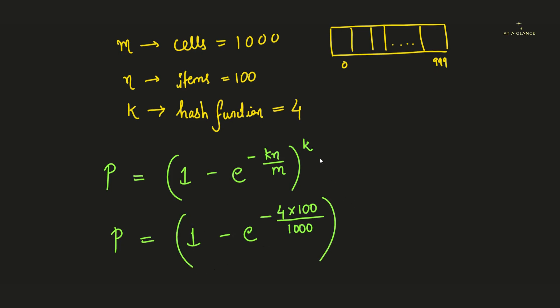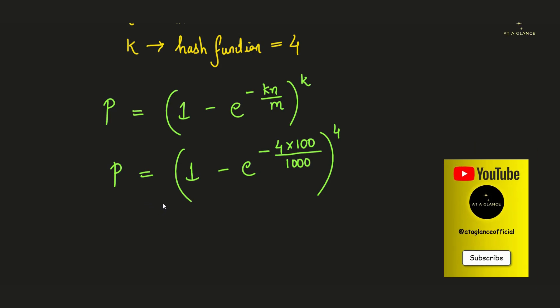divided by m value. Now m value in the question is given as 1000. Now this whole has to be raised to k, that is 4. Now that we have plugged in all the values of all these parameters k, n, and m, let's try to solve this particular expression. Here we get 1 - e^(4 × 100 gives us 400